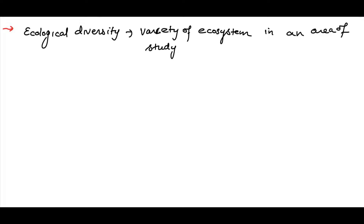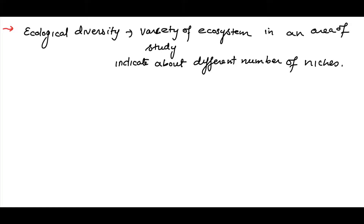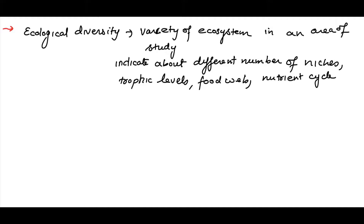Ecological biodiversity indicates the different niches which are present, the different trophic levels, the food webs present in a particular area, the nutrient cycles going on, and other ecological processes occurring in that area.